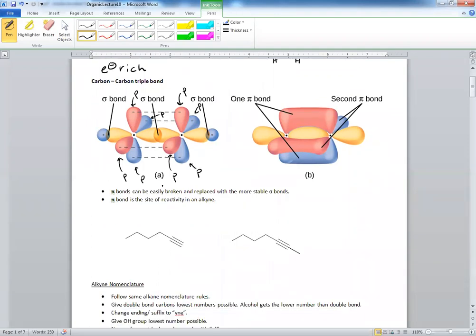So the pi bonds can be easily broken and replaced with more stable sigma bonds. And the pi bond is the site of reactivity in an alkyne. That's why they are reactive.